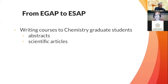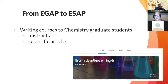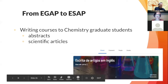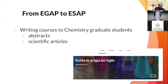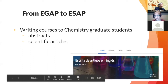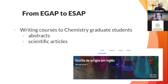I'll show examples of going from English for general academic purposes to English for specific academic purposes. At the Federal University of Minas Gerais, we prepared and gave courses on abstract writing and writing of scientific articles to chemistry graduate students. This is a screenshot of our Google Classroom. We offered a course on how to write scientific articles — the title was in Portuguese — and students received credits for taking it through the chemistry graduate program, taught by myself and some of my PhD students.